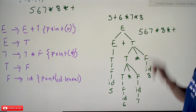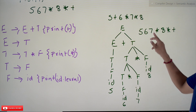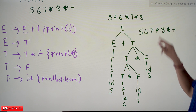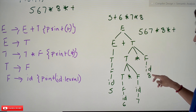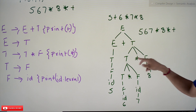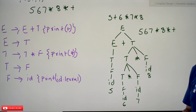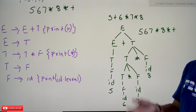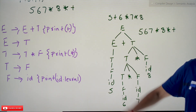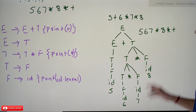After T → F, id is encountered, so 6 is displayed — giving us 5, 6. Then id for 7 is displayed. After T star F is completed, star is displayed. Then F → id gives 8. After the second T star F is completed, another star is displayed. After E plus T is completed, plus is displayed. So during syntax analysis we can easily convert infix to postfix by adding these extra semantic conditions.